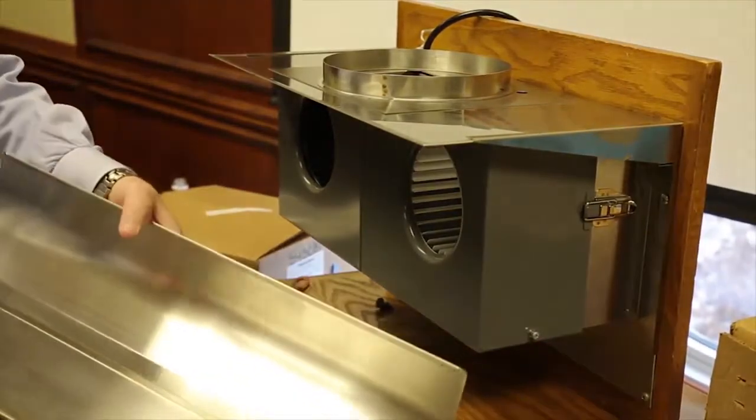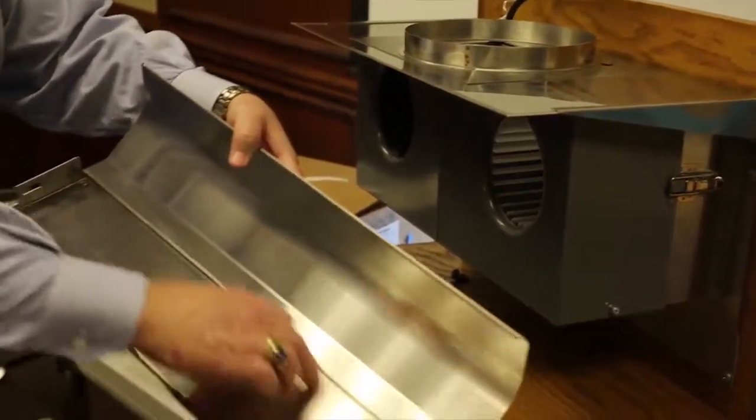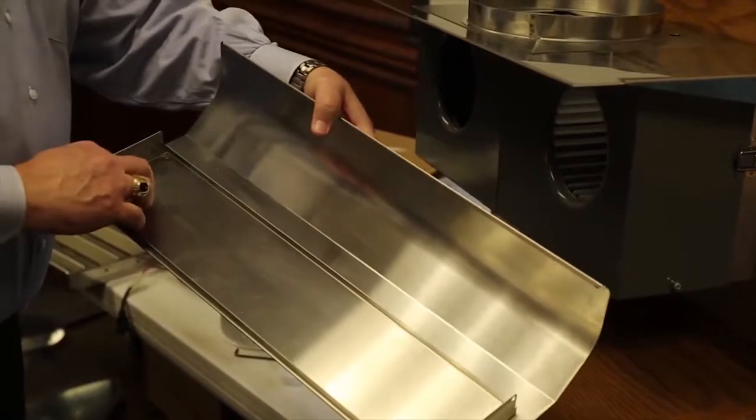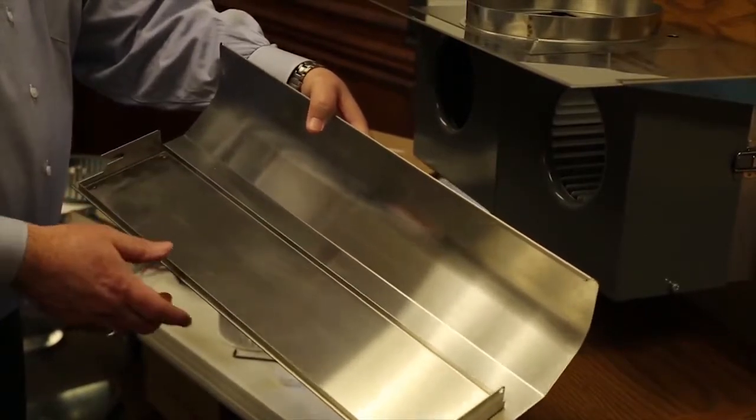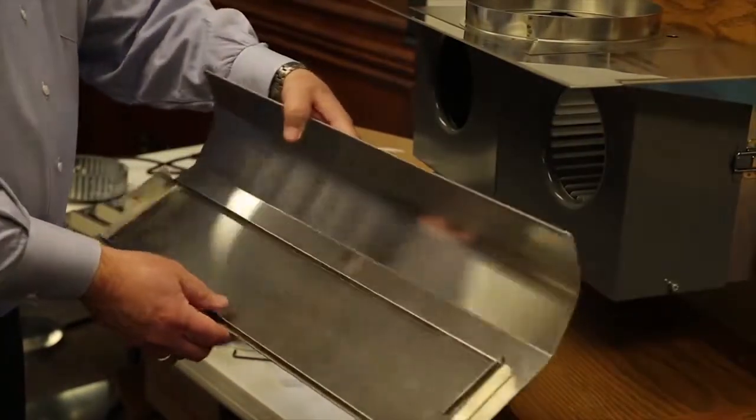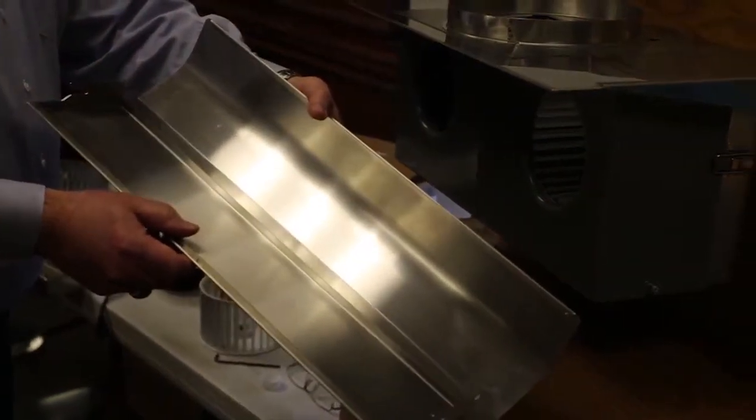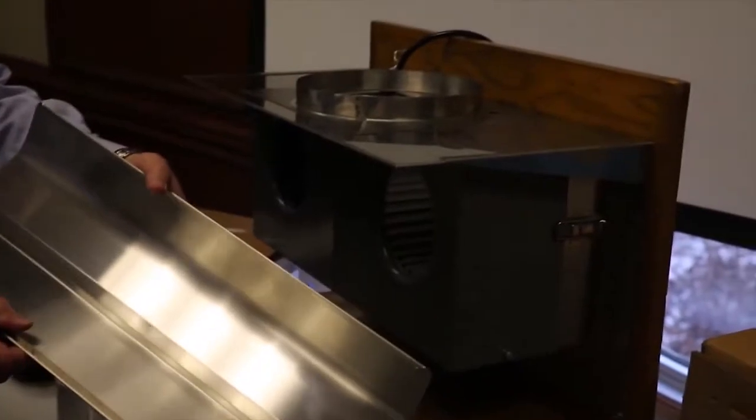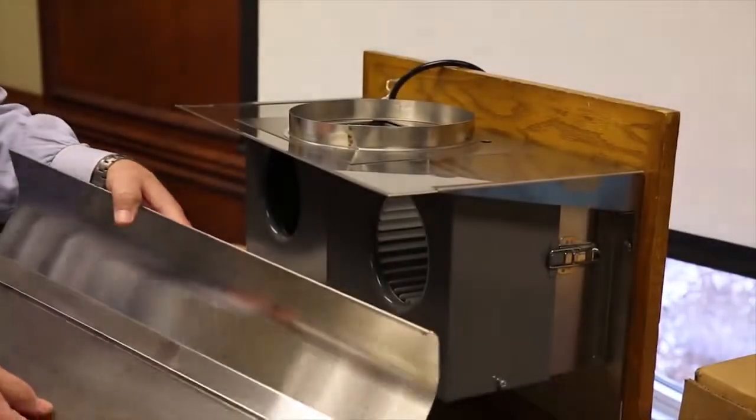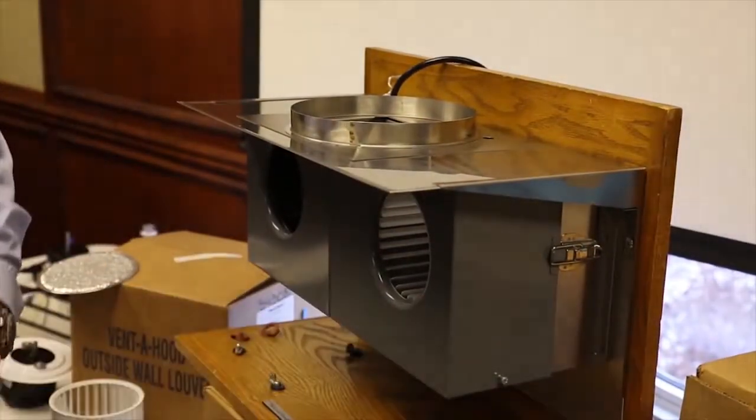The basic grease from the system is going to be on this tray here. You can wipe it out with a paper towel or throw it in the dishwasher if it's stainless steel. If it's painted, we don't generally recommend that because the dishwasher detergent will damage the paint after a period of time, but you certainly can put it in the dishwasher if you like.